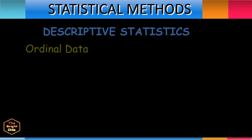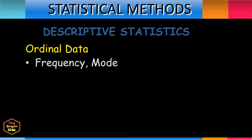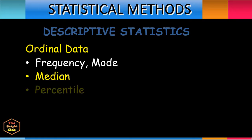For ordinal data, the descriptive statistical tools include frequency and mode. The median is used to determine which variable in the data set is at the center. We can also use the percentile, which indicates the percentage of scores that fall below a particular value, and the range, which measures the variability or how far apart data points lie from each other.